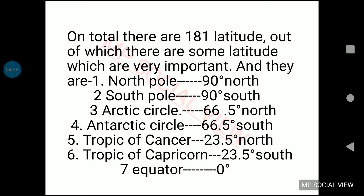There are many important latitudes on earth: the north pole, south pole, arctic circle, antarctic circle, tropic of cancer, tropic of capricorn, and the equator. The north pole is 90 degrees north, the south pole is 90 degrees south, the arctic circle is 66.5 degrees north, the antarctic circle is 66.5 degrees south, the tropic of cancer is 23.5 degrees north, the tropic of capricorn is 23.5 degrees south, and the equator is 0 degrees. The question is: why are only these latitudes considered important, out of all 90 latitudes? The equator is important because it is drawn at the center of the earth, dividing it into the northern hemisphere and southern hemisphere.